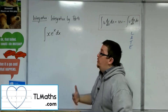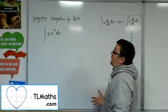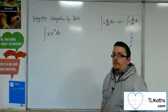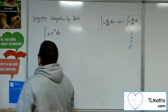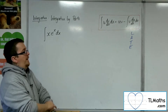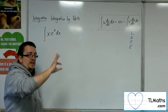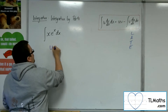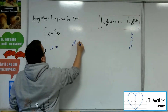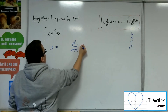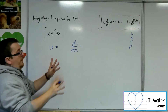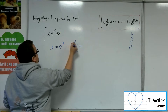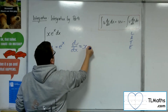In the previous video, I showed you this example and how to do it right. In this video, I'm going to show you how to do it wrong. That would most likely come from getting the u and the dv by dx mixed up. So let's say that's precisely what we did, and we've forgotten the LIATE rule, and we put the u as e to the x and the dv by dx as x.